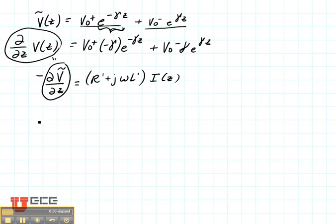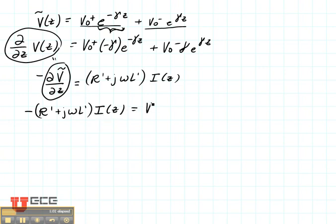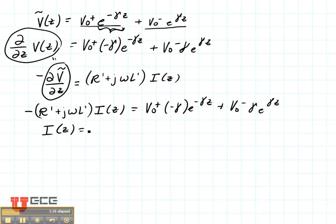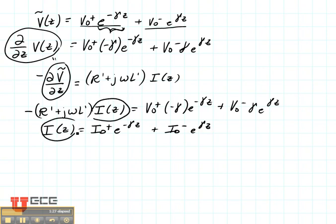So let's set those two equal. In this case I'm going to have minus R' plus j omega L' times the current, equal to V0 plus minus gamma e to the minus gamma z, plus V0 minus times gamma e to the gamma z. Now we know something else about current — we know that the current is also the sum of the positive and the negative traveling waves. So this term and this term have to be equal.